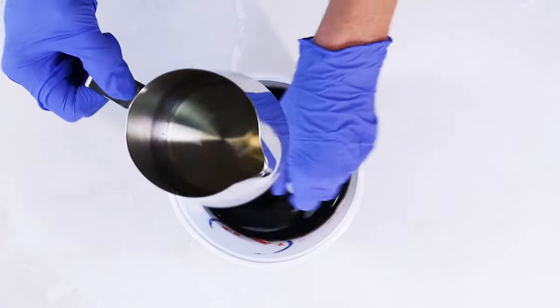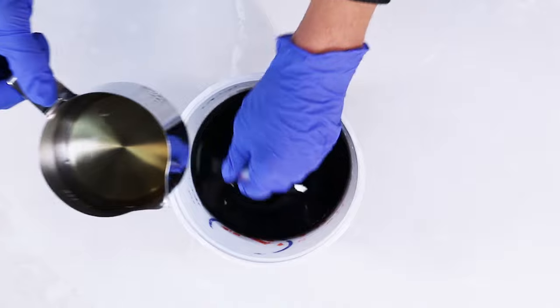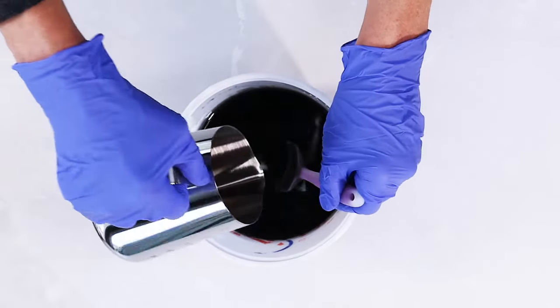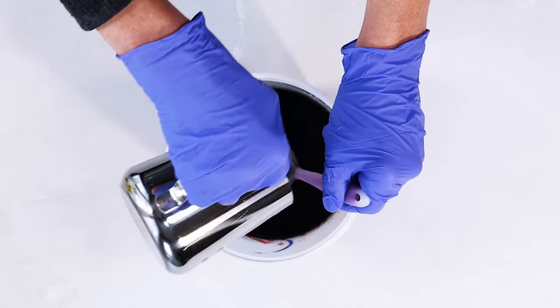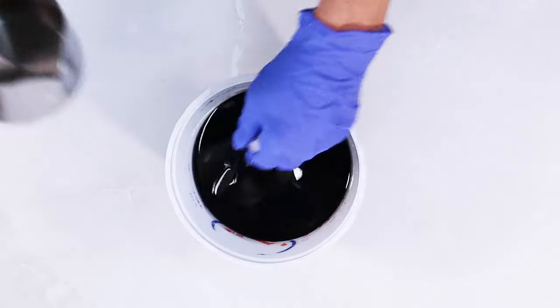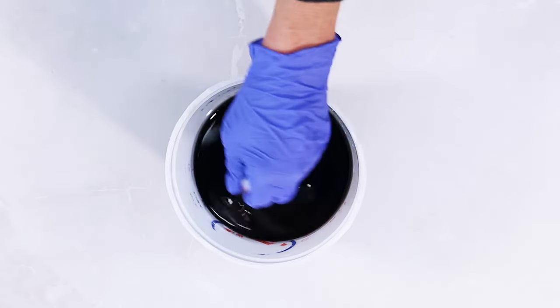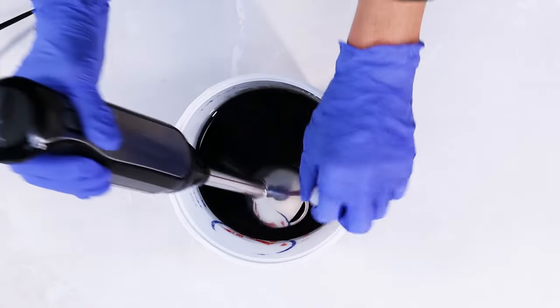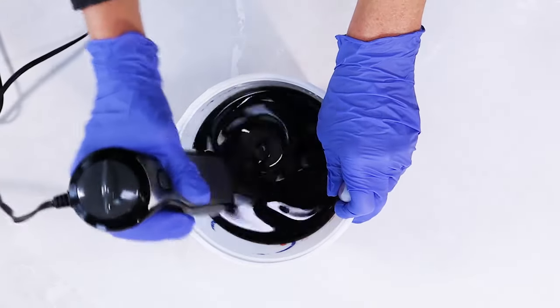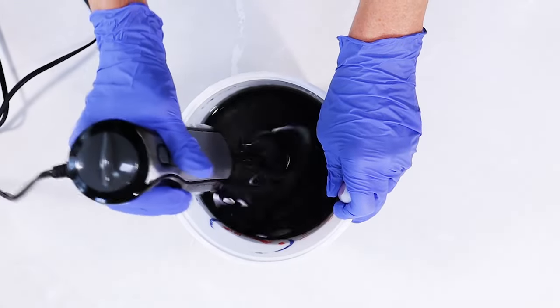The fragrance oil that I'm using is Sugar Plum Fairy from Oregon Trails. It discolors to a dark brown so this is the perfect time to use it. It smells amazing. So I'm just going to blend this up to a nice medium trace before I pop it in the mold.